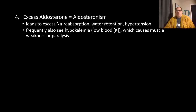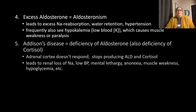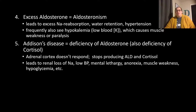Excessive aldosterone (aldosteronism) leads to excessive sodium reabsorption, water retention, hypertension, and hypokalemia (low blood potassium), which can cause muscle weakness and paralysis. Addison's disease is the opposite — a deficiency of both aldosterone and cortisol — causing renal sodium loss, low blood pressure, mental lethargy, anorexia, muscle weakness, hypoglycemia, and many other effects.